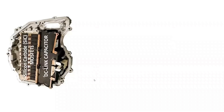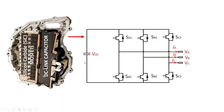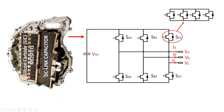The conventional 3-phase 2-level inverter consists of a DC-link voltage and 6 switching power semiconductor devices. In this case, a conventional 2-level inverter structure with 4 MOSFETs paralleled per switching device to handle the high current.